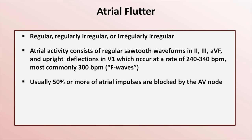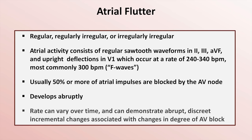Usually 50% or more of atrial impulses are blocked by the AV node. For example, if the flutter rate is 300 beats per minute but every other atrial impulse is blocked due to the AV node's refractory period, the overall ventricular rate will be 150 beats per minute. Like AFib, flutter develops abruptly, and the rate can vary over time with abrupt discrete incremental changes associated with changes in the degree of AV block.